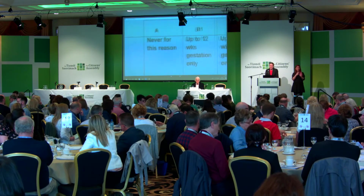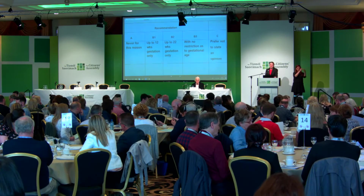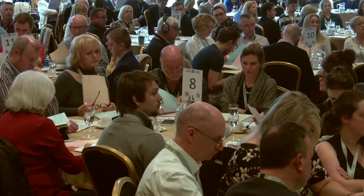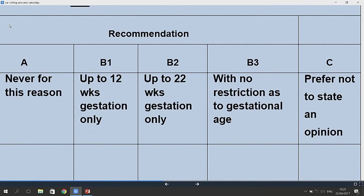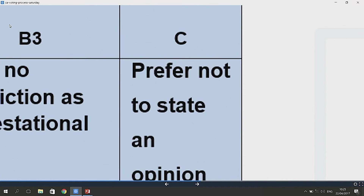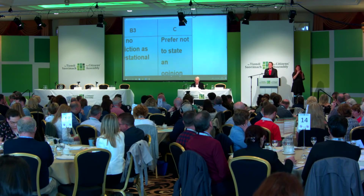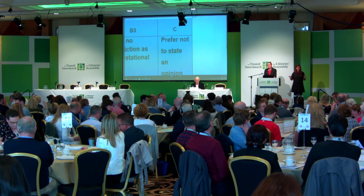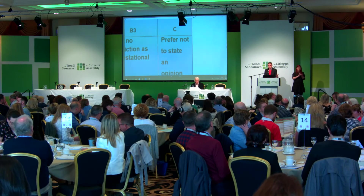Option A and options B1, B2, and B3 are all collectively referred to as recommendations. These four columns will be added up to present the opinions expressed by the citizens as recommendations. For the purposes of determining a majority, all of B1, B2, and B3 will be added together to provide the totality of citizens who have voted in favour of termination of pregnancy in some circumstances, with gestational limits or none. Column C is "prefer not to state an opinion" — included for the same reasons outlined previously, and also to reflect that somebody who did vote for change may just not want to state an opinion on this particular question.